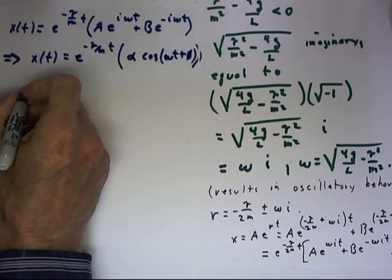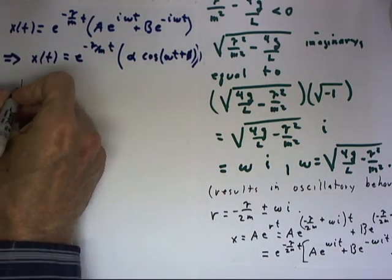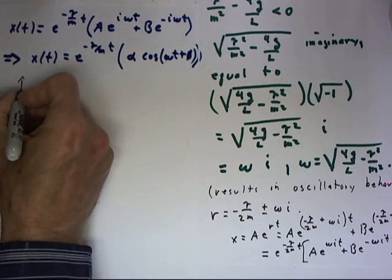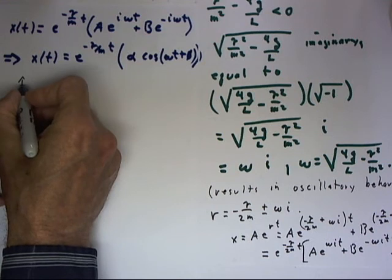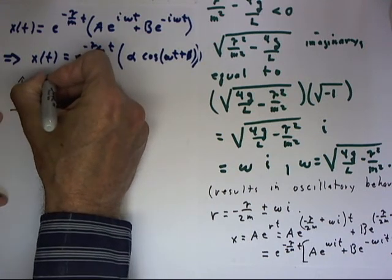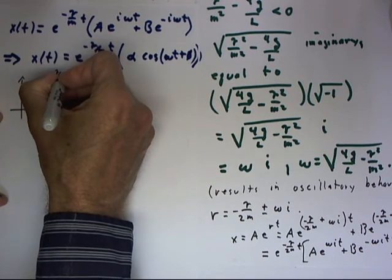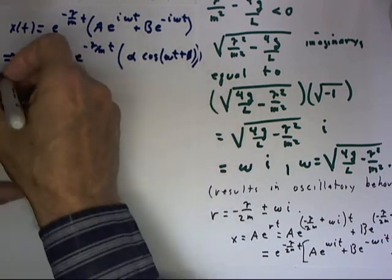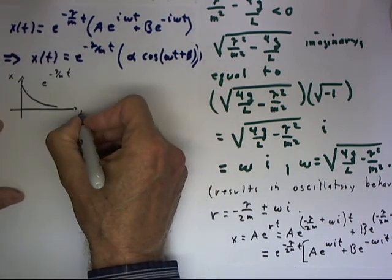Now, our e to the negative gamma over mt has a graph that looks like this. It's just decaying exponential. Again, this is a graph of x versus t.